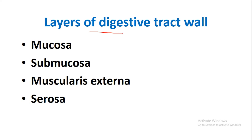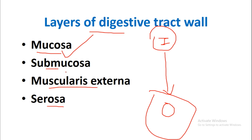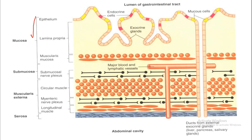The digestive tract is organized into four layers from the inner side towards the outer side. The innermost layer is the mucosa, followed by the submucosa, then the muscularis externa, and the outermost layer is the serosa. So from inner to outer: mucosa, submucosa, muscularis externa, and serosa.